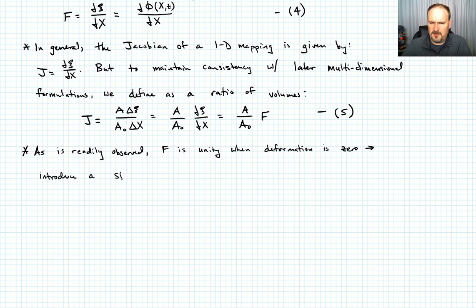So what that lets me do is introduce a strain measure. So I'm going to introduce a strain measure, call it ε, such that ε is going to be equal to F minus 1. Maybe I should say F, and I'll remind you that F is a function of X and t minus 1. So let's have a look here. What that means is that when there's no deformation, I expect my strain to be 0, and since at the time of no deformation, F is 1, 1 minus 1 is 0, so at least that makes sense on its surface.